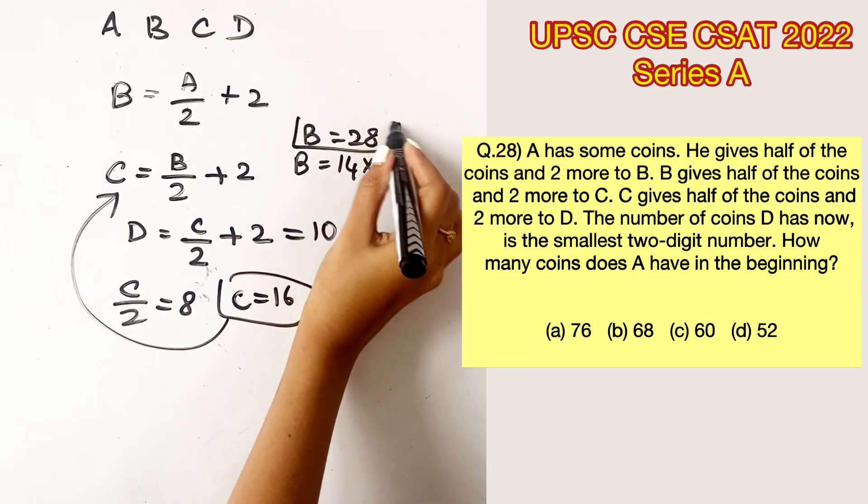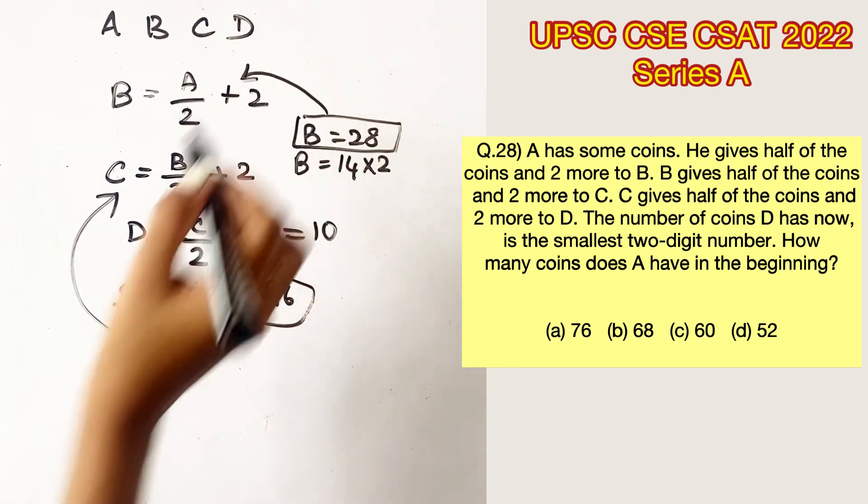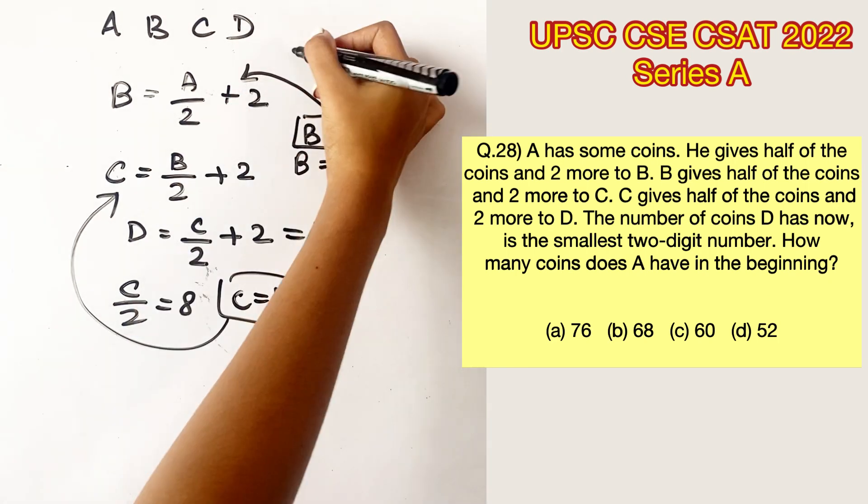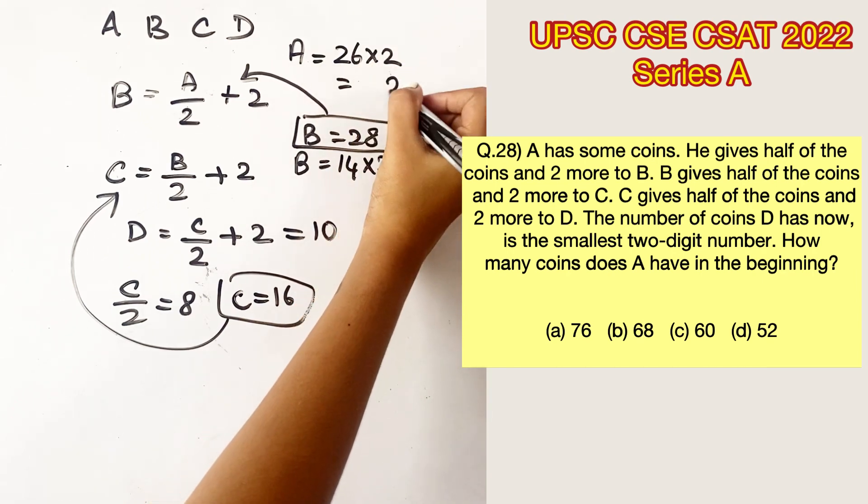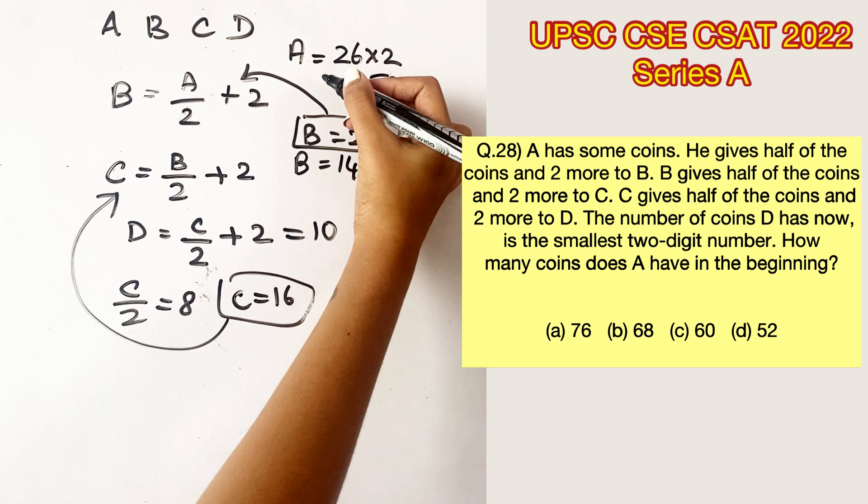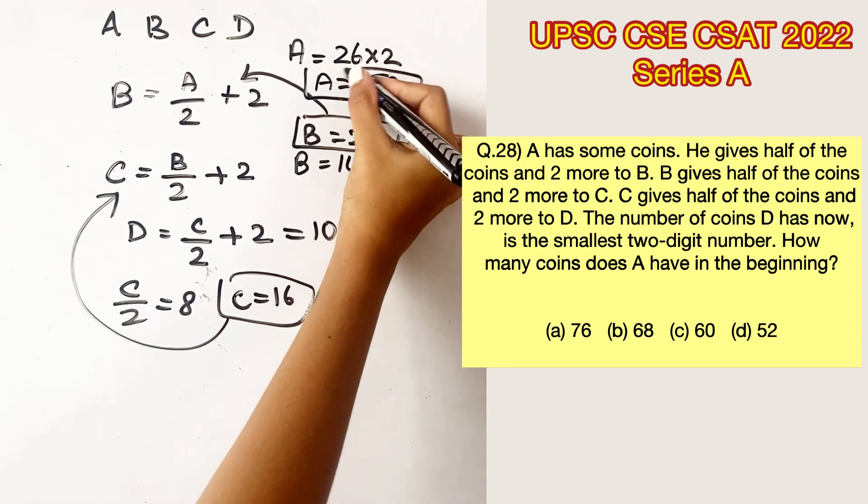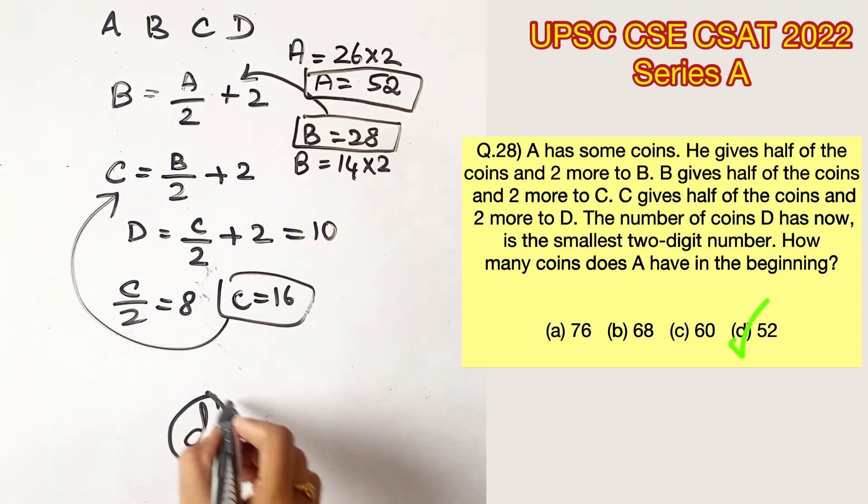Now we can substitute B equals 28 in this equation and we will get the answer for A. So A equals (28 minus 2) times 2, which is 26 times 2. So A equals 52. Option D is the answer.